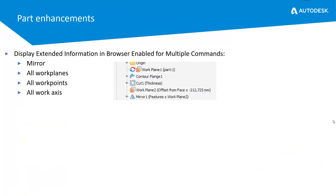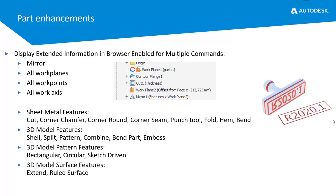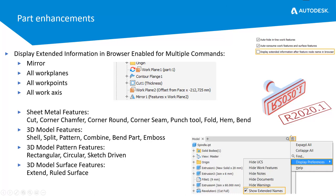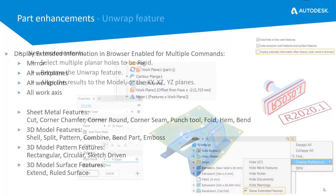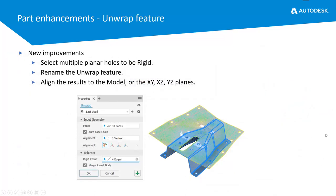Additional part enhancements: display extended information in the browser has been enabled for multiple commands, accessible via Application Options or from the browser itself by clicking the three dots > Display Preferences > Show Extended Names. The unwrap feature also received updates — you can now choose multiple planar holes to be rigid, rename the unwrap feature, and align results to the model or the XY, XZ, or YZ planes.